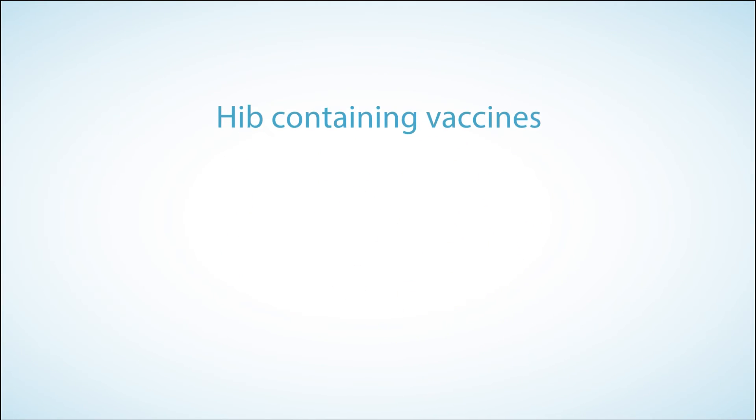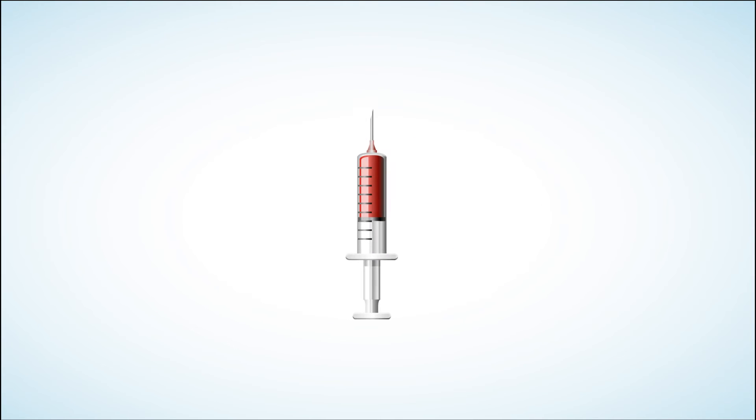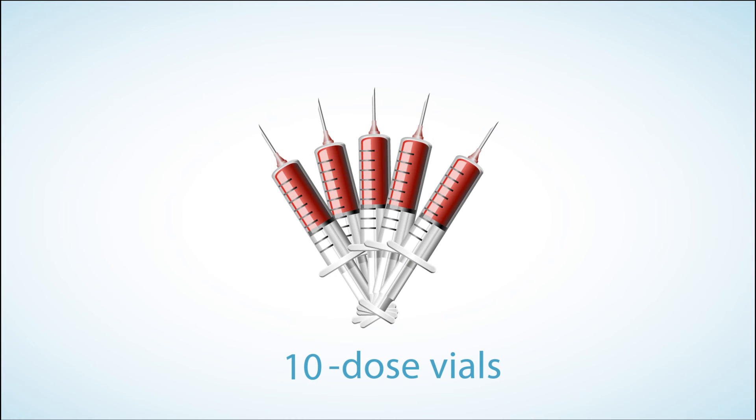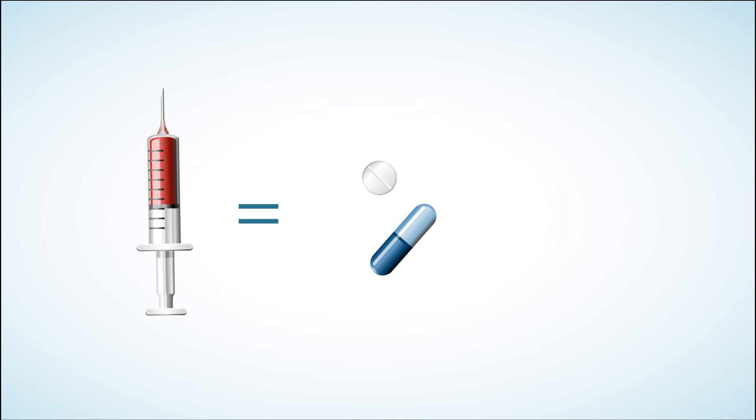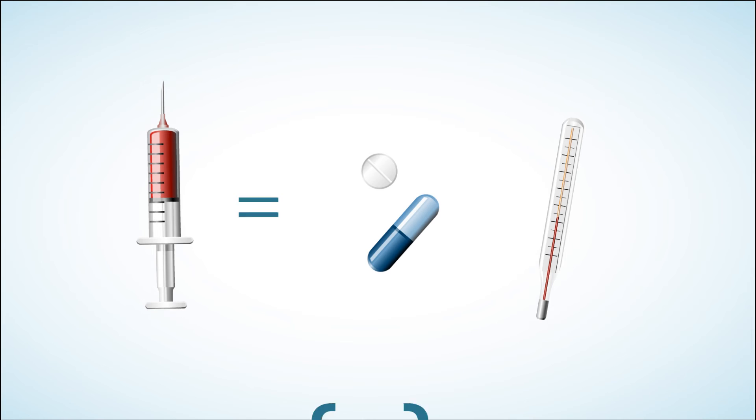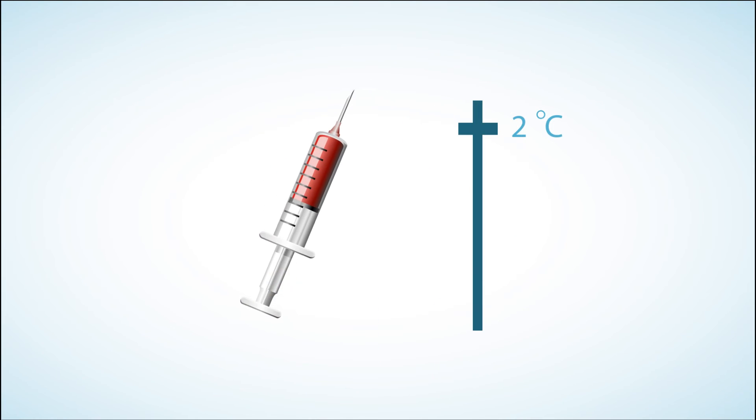Hib containing vaccines are supplied in liquid or freeze-dried powder formulations in single and multi-dose presentations. Pentavalent vaccine is available in 2 and 10 dose vials. Pentavalent vaccine with a freeze-dried Hib component requires reconstitution. The diluent for pentavalent vaccine is the DTP plus Hib component. Hib containing vaccines must be stored between plus 2 degrees C and plus 8 degrees C without being frozen.